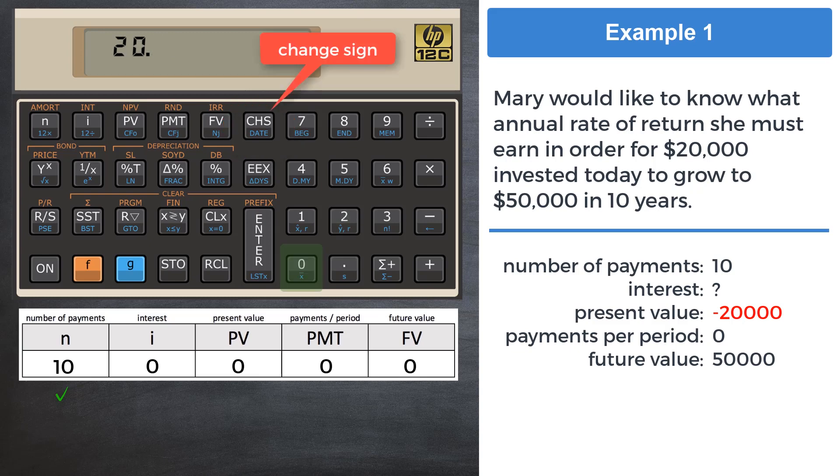CHS stands for change sign, and it will make positive numbers negative and vice versa. Press CHS after you've keyed in 20,000, and then enter it into the present value register using the key marked with PV.